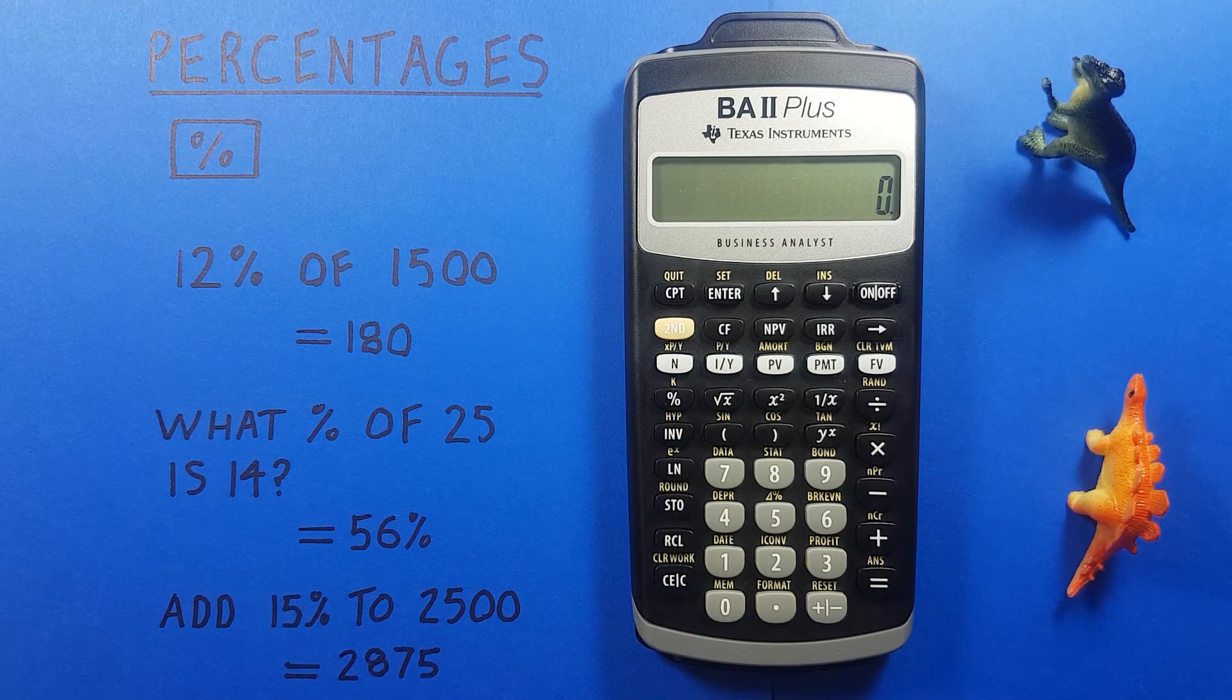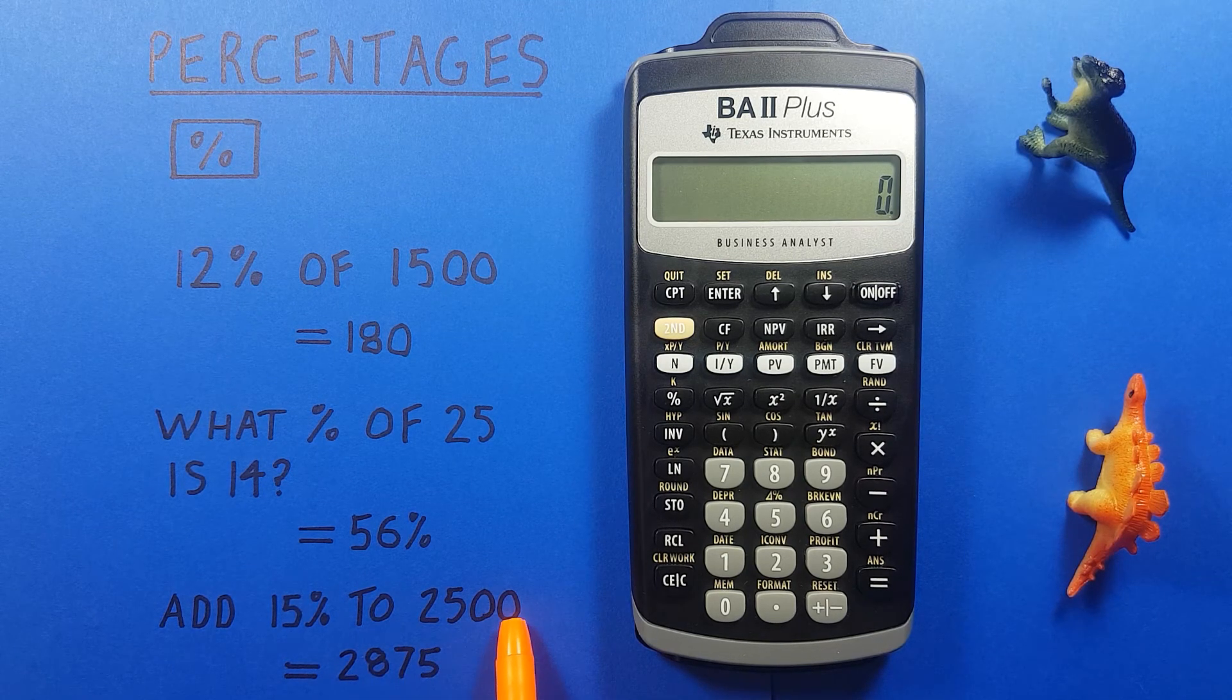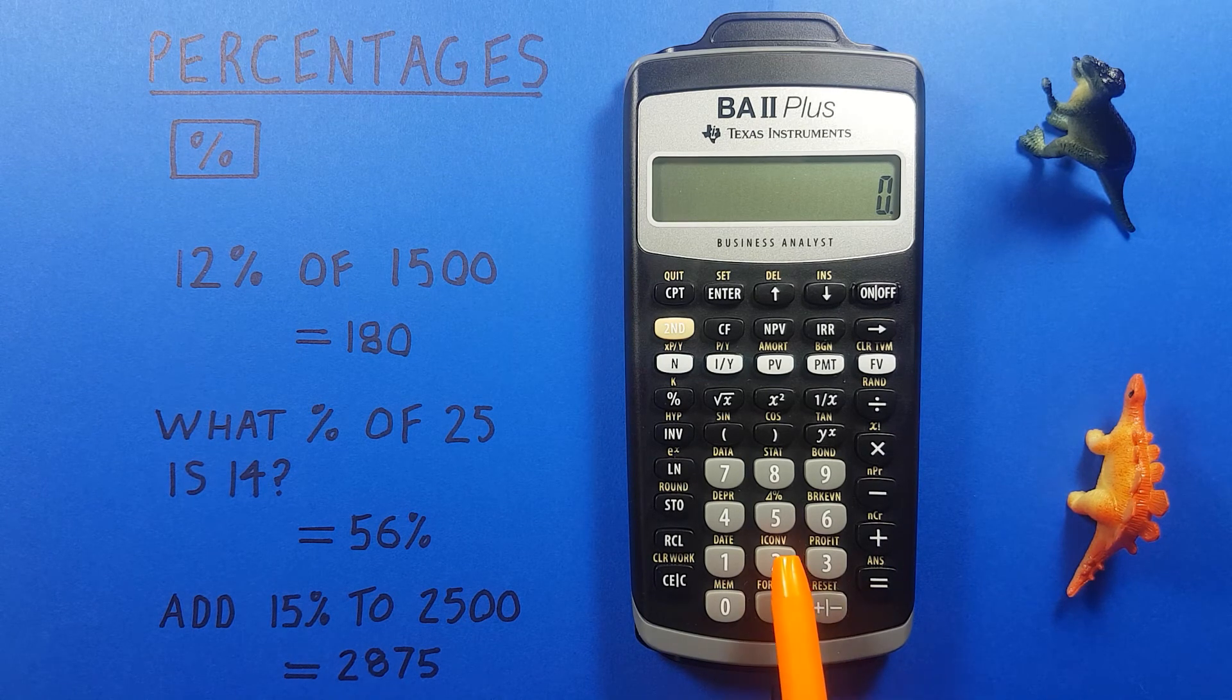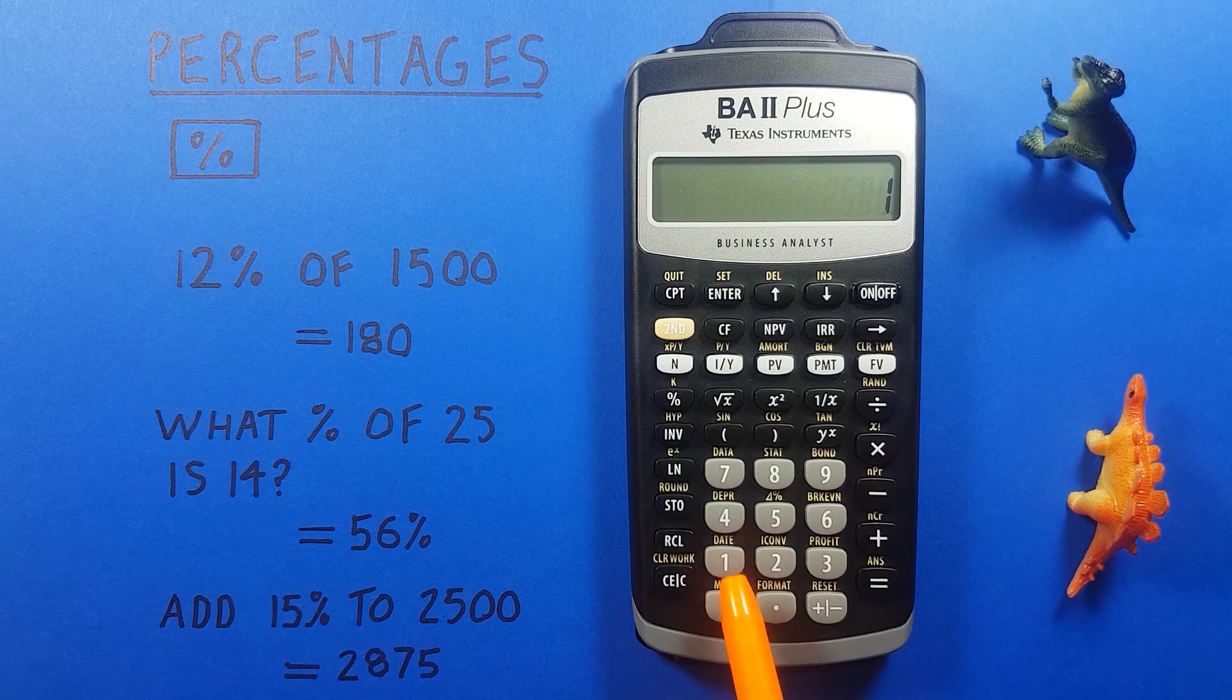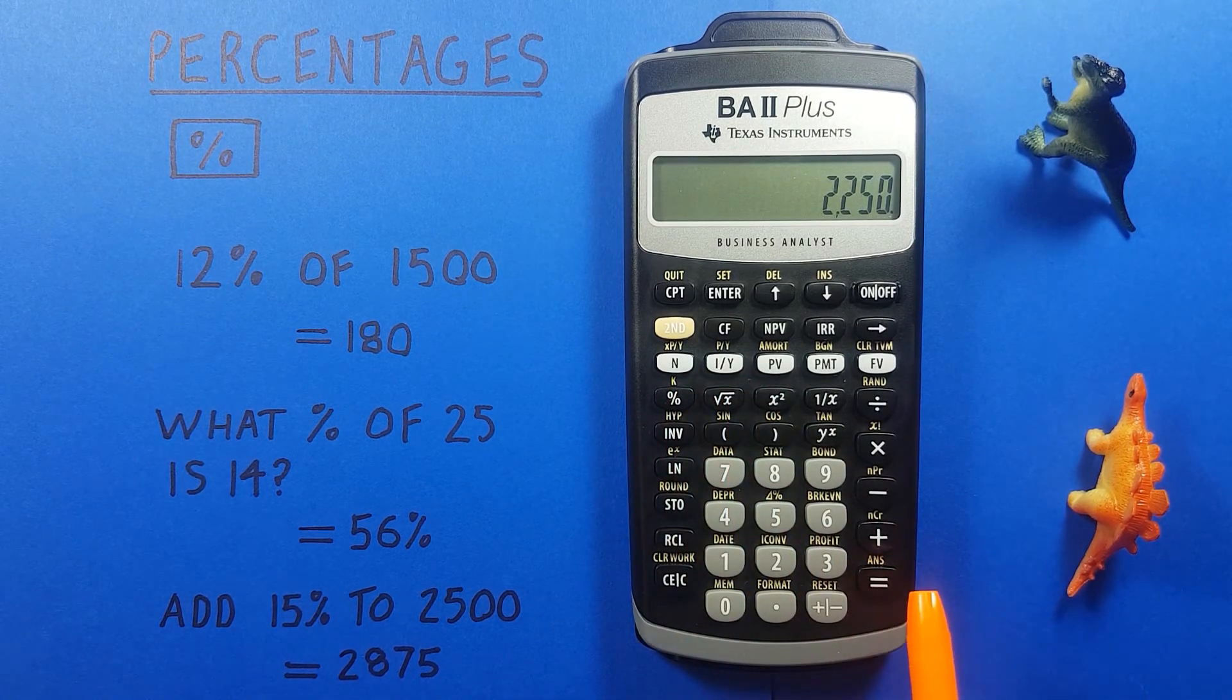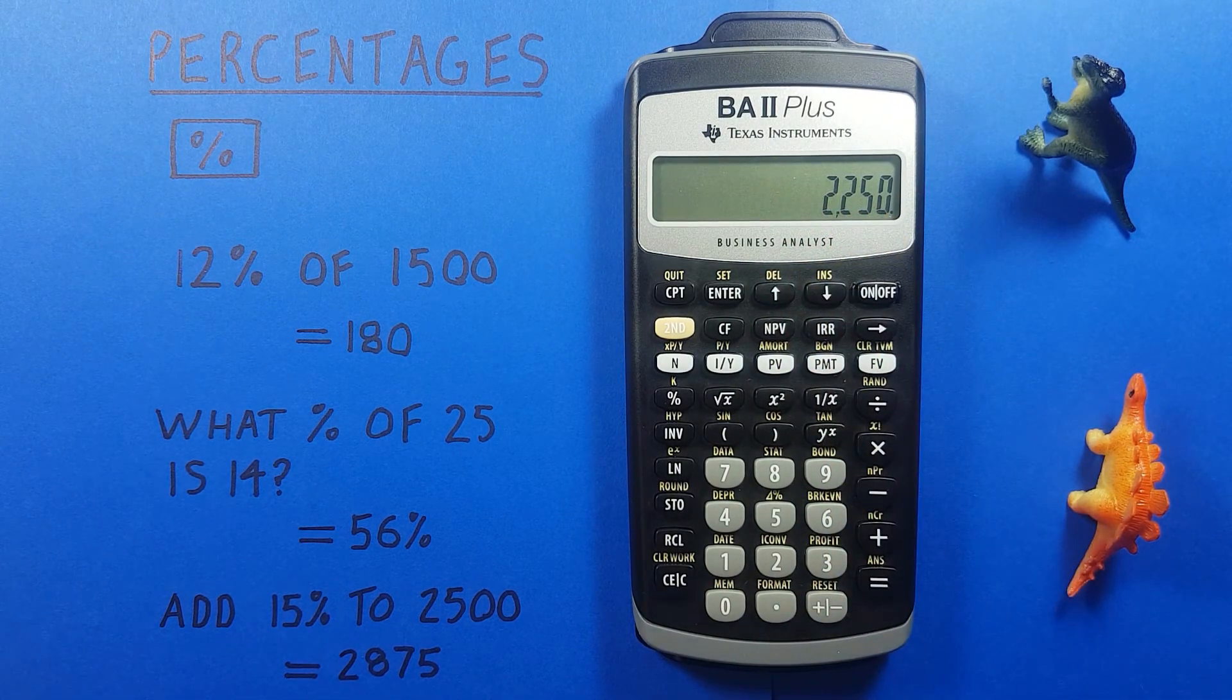We can also use this for discounts. Say we had an item that cost $2,500 and was 10% off. Well again we enter the initial cost of the item and then just hit minus 10 and then the percentage key and press equals and we see that 10% discount would make the item cost $2,250.